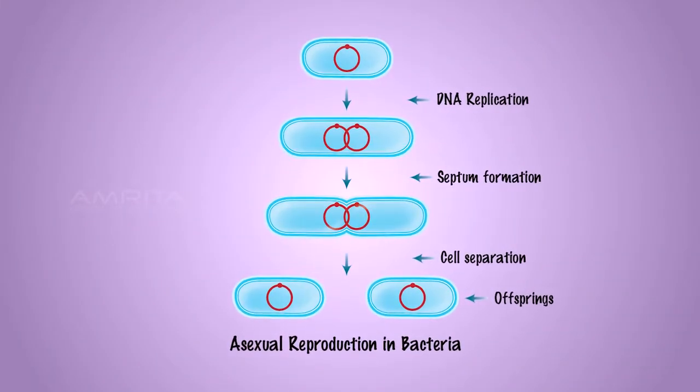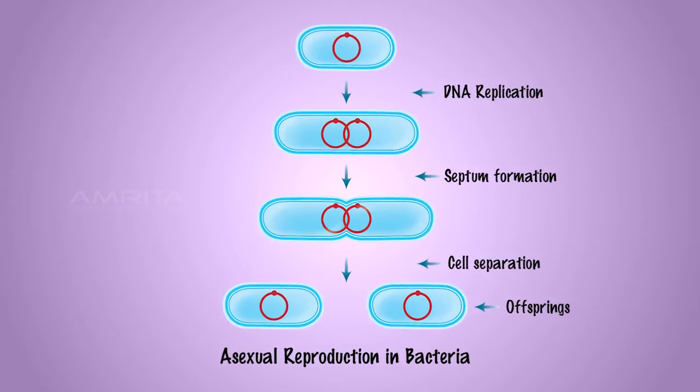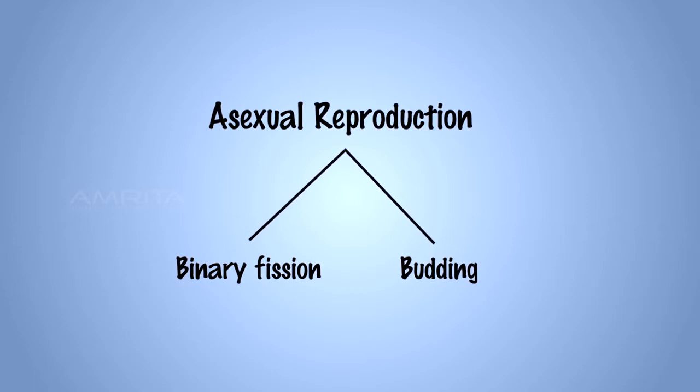Asexual reproduction, on the other hand, is a reproduction in which the offspring arises from a single parent. Binary fission and budding are two common methods of asexual reproduction.